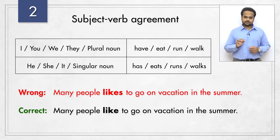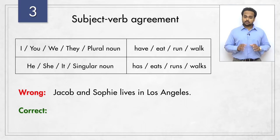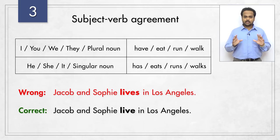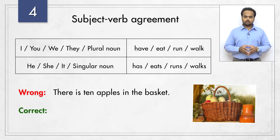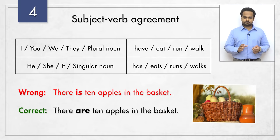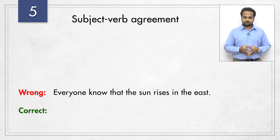Next one – 'Jacob and Sophie lives in Los Angeles.' The correct sentence is 'Jacob and Sophie live in Los Angeles.' Even though Jacob is an individual and Sophie is also one individual, together Jacob and Sophie are a plural subject, so we don't add S to the verb. Sentence number four – 'there is ten apples in the basket' should be 'there are ten apples in the basket.' The subject of this sentence is not 'there' – that's just a dummy subject. The real subject is 'ten apples,' so the verb should be 'are.' Number five – 'everyone know that the sun rises in the east' should be 'everyone knows that the sun rises in the east.'